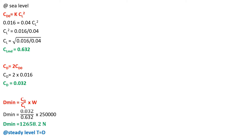The minimum drag force acting on the aircraft is determined using the formula: drag minimum equals (CD / CL) multiplied by weight. Since all three values — coefficient of lift, coefficient of drag, and weight — are known, drag minimum is found to be 12,658.2 Newton. We know that at steady level flight thrust equals drag, hence the minimum thrust is also 12,658.2 Newton.